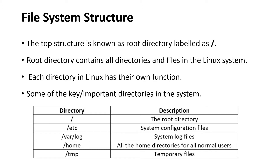Looking at the table: forward slash is the root directory, which consists of all directories and files in the system. Slash etc contains the system configuration files. Slash log has the system log files. Slash home contains all the home directories for normal users. Slash tmp is where we store all the temporary files.